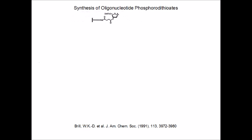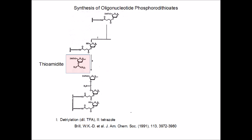The synthesis of oligonucleotide phosphorodithioates begins with a nucleoside or polynucleotide which is completely protected at its bases and its phosphodiesters or phosphodiester analogs, and bound by its 3'-hydroxy to a polymeric support via an ester linkage. This molecule bears a 5'-dimethoxytrityl group, which is an acid-labile protective group that can be removed upon treatment with dilute trifluoroacetic acid. Subsequent coupling with a thioamidite with the now-liberated 5'-hydroxy function on the polymeric support is then performed.